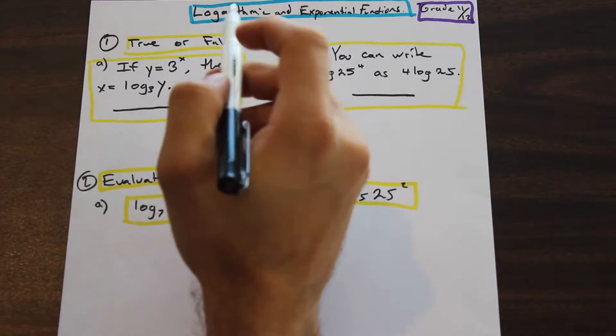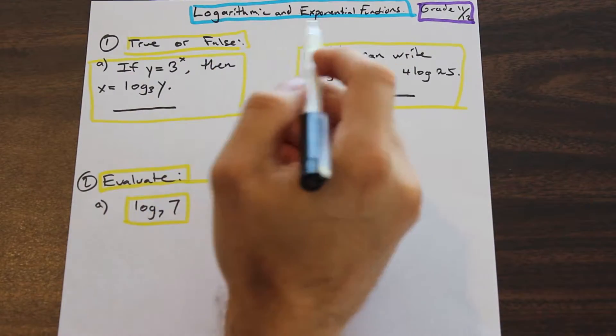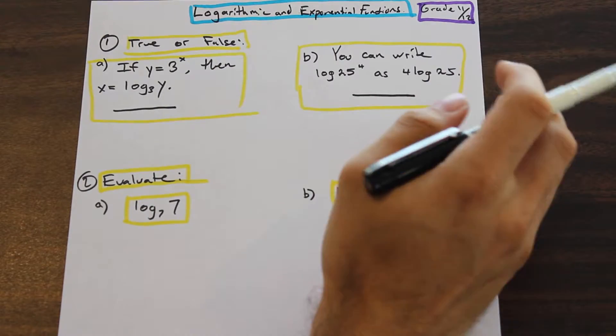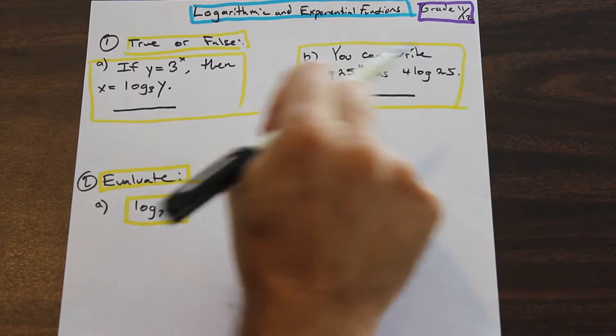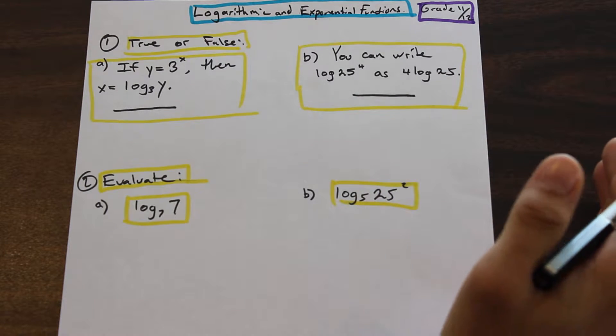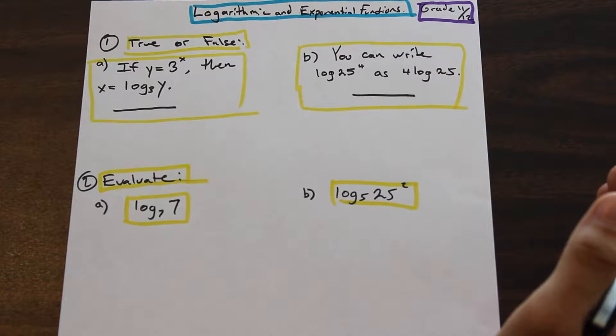So the first question is, if y equals three to the power of x, then x equals log base three y. Okay. So I'm not going to bore you with the explanation of what log is or what it means or anything like that. You can just Google that if you want.